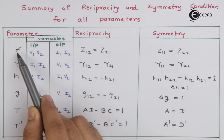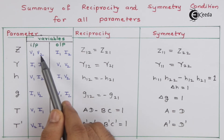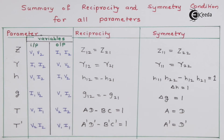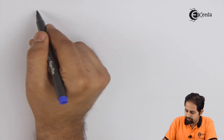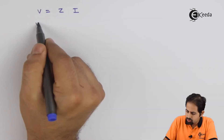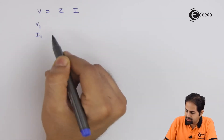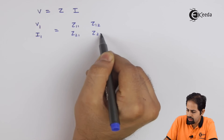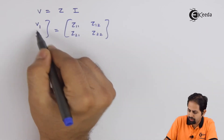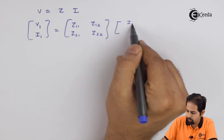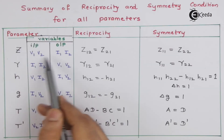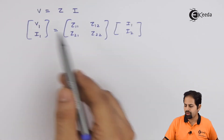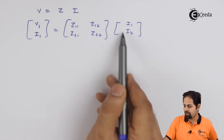Now we will see it once again. For Z parameters, the input is V1 and V2, output is I1 and I2. We write V equal to Z·I, so it is V1, V2 on the left, then Z11, Z12, Z21, Z22 are my parameters or coefficients, and I1, I2 are on the right. This is how I got it — just by writing V1 and V2 at the input, the parameters in between, and these are my output terminals.